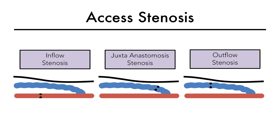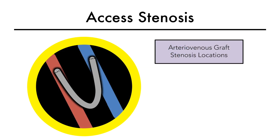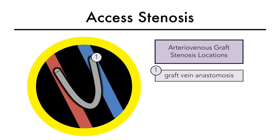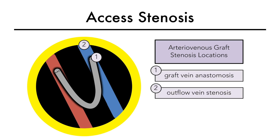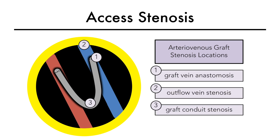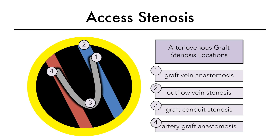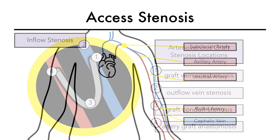Juxta-anastomotic is the most common type of stenosis in an AV fistula, followed by venous outflow stenosis. The most common locations for stenosis in an AV graft, in descending order, are graft-vein anastomosis, outflow vein stenosis, graft conduit stenosis, and artery-graft anastomosis.